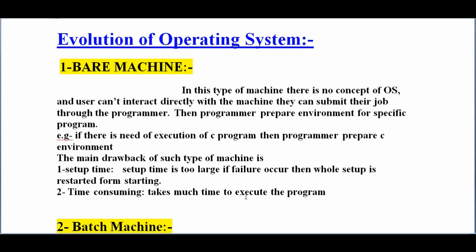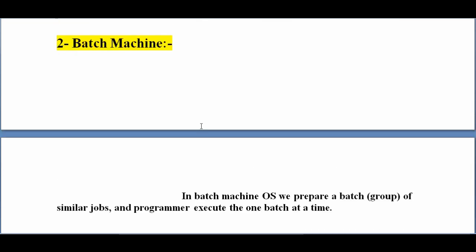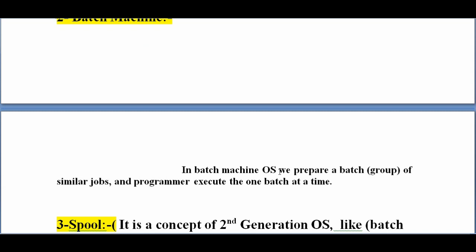The next operating system is the batch machine. Batch machine means you create a group of tasks and then submit your tasks to the system. In batch machine, the operating system prepares a batch — a group of similar jobs — and the programmer executes one batch at a time.